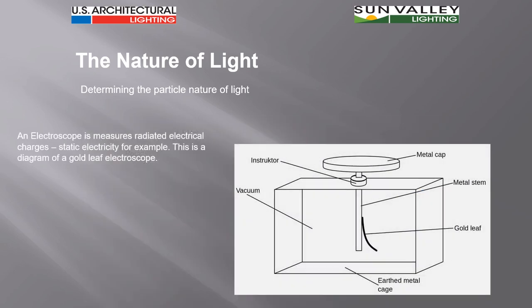There's a device to be able to understand how this works and it's called an electroscope. An electroscope is a device that measures radiated electrical charges, static electricity for example. The diagram here is of a very basic what's called a gold leaf electroscope.